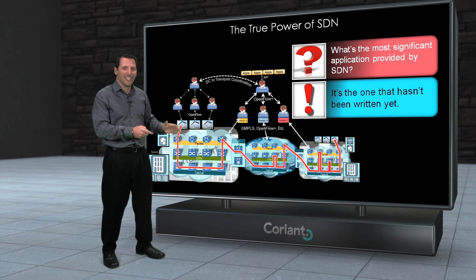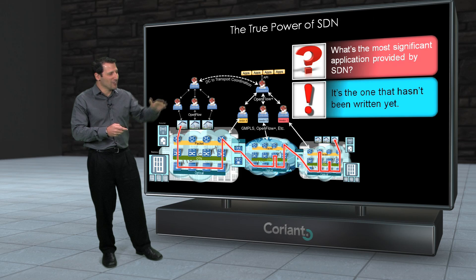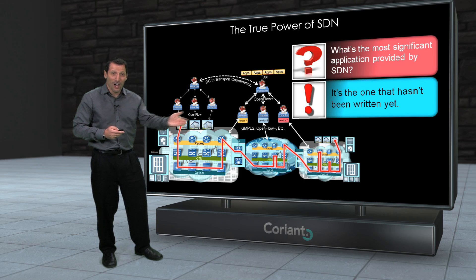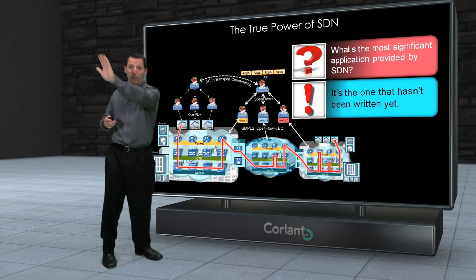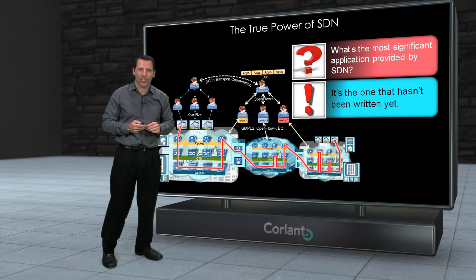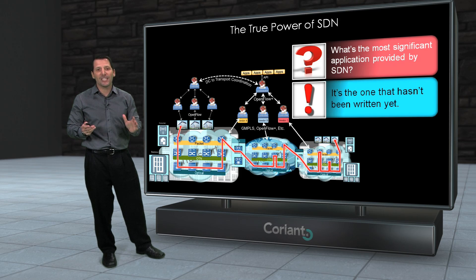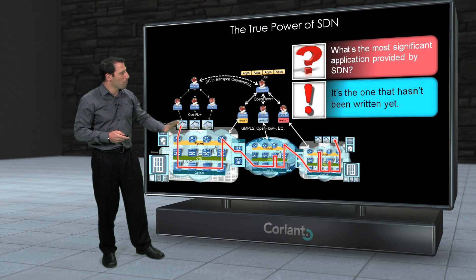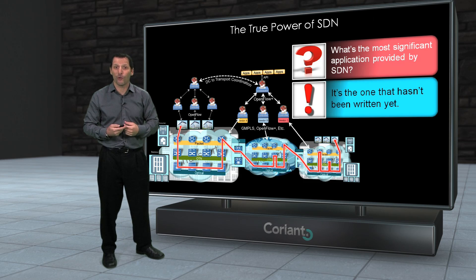The real killer app for SDN is the ability to write apps. What this enables service providers to do is to customize not only the way the network operates, but the way you interface with the network, and to create a variety of different applications for different functions. I can create an app to work with my provisioning team, an app to work with my operations team, and separate apps for different individual enterprise customers — giving each a unique and different experience when interfacing with my network. Really, the future of how service providers compete and differentiate themselves is going to be to build this extremely flexible tool that SDN can operate on, and then come down to who builds which applications to differentiate and create truly dynamic and innovative service offerings.